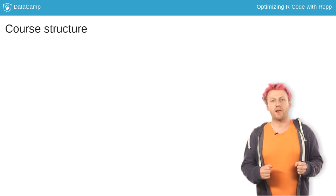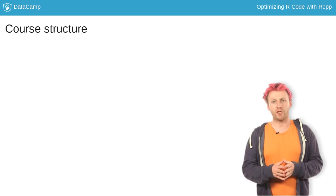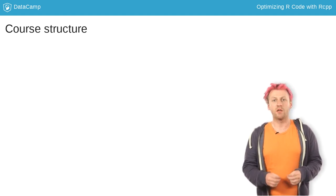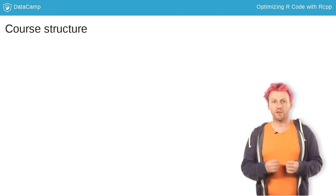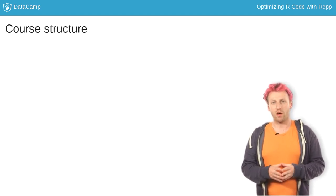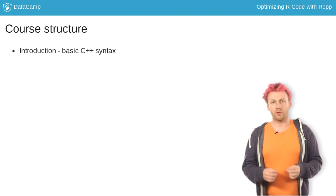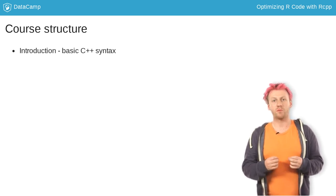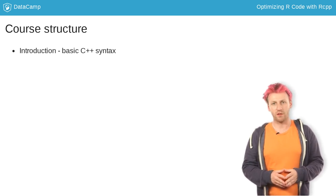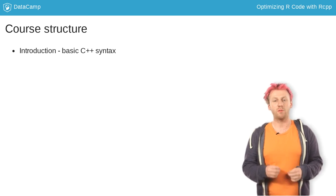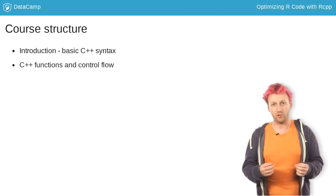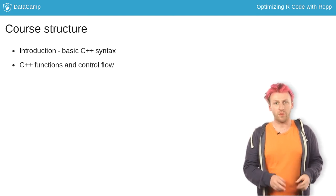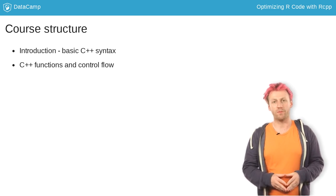The course is divided into four chapters that will gradually equip you with skills to take advantage of C++ in your R code. The first chapter covers basic C++ syntax. The second chapter is about C++ functions — you will learn how to write them and how to make them available to R.